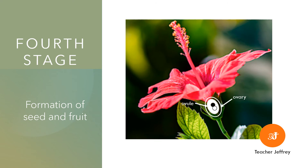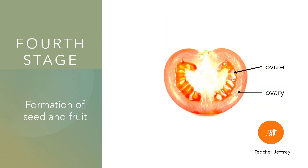The fourth stage is the formation of seed and fruit. In this stage, the ovule where fertilization occurred becomes the seed, and the ovary will become the fruit. As it develops, the other parts of the flower will wither and fall to the ground. An example is the tomato fruit — the juicy and fleshy part is once the ovary, and where the seeds are is once the ovule.